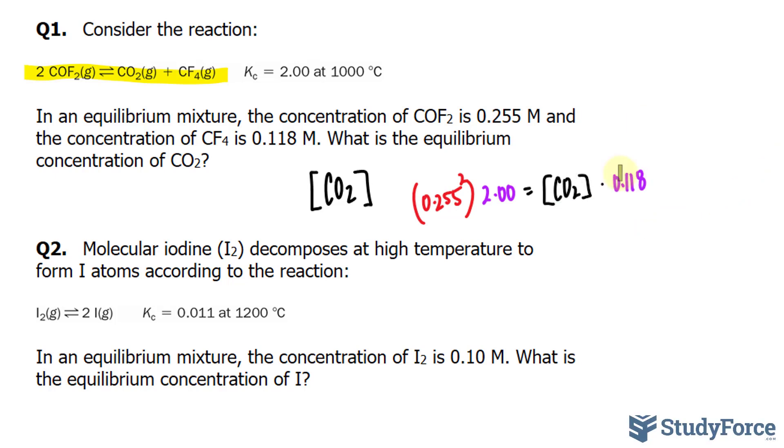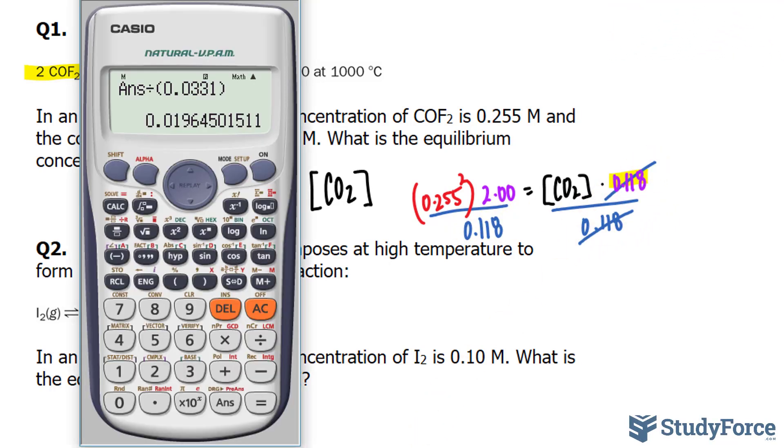Next, we still have to worry about the factor 0.118, and you can get rid of that by dividing both sides by that. 0.118, 0.118. This cancels out with that, and now we use our calculator. 0.255 raised to the power of 2 times 2.00. Both of those numbers are three significant figures, and the denominator's a three significant figure number, 0.118.